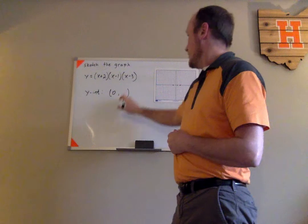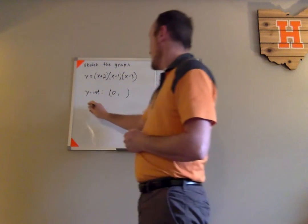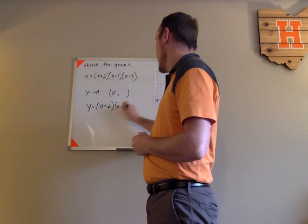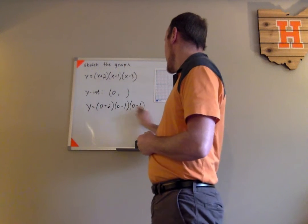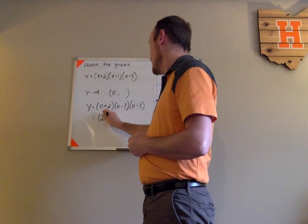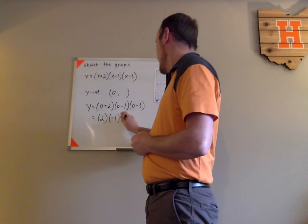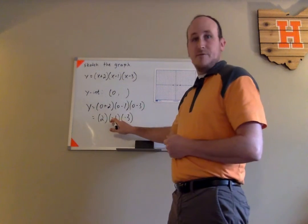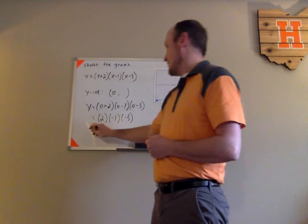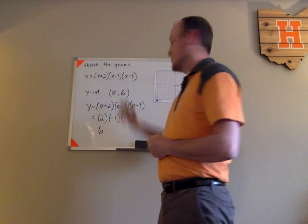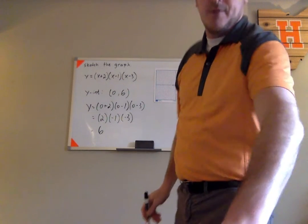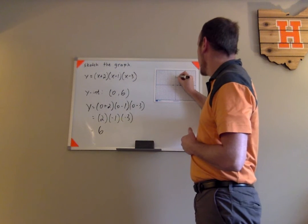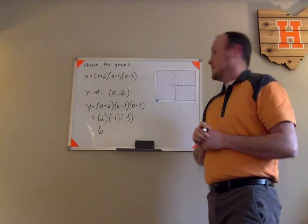I'm trying to find the y-coordinate of the point on the y-axis, so I'll plug in zero for all of the x's. That gives me zero plus two, zero minus one, and zero minus three, which is two times negative one times negative three. Two times negative one is negative two, and negative two times negative three is positive six. So the point (0, 6) is the y-intercept, and I'll plot that on the y-axis at six.